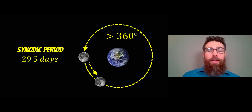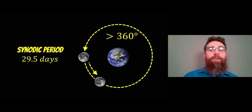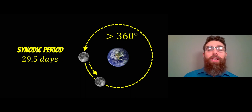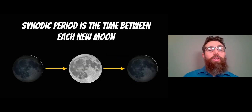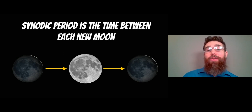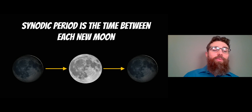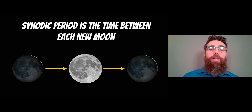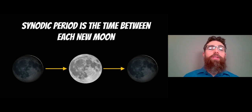The other period is the synodic period. This is actually longer by about two days than the sidereal period — it's longer than 360 degrees, so the Moon goes all the way around and then a little bit more. The reason for that relates to the lunar cycle. If you time it from each new Moon to the next new Moon, you get just over 29 days. So why is the lunar cycle longer than the orbital period to get back to the same position?